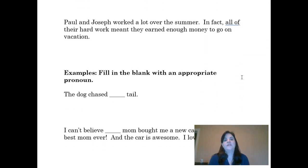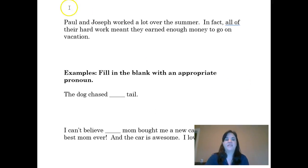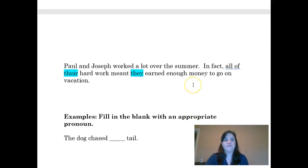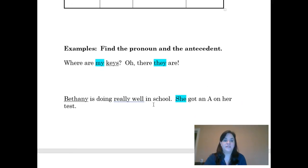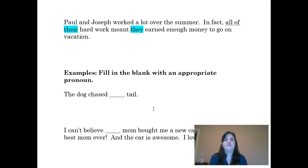Let's do one more example: 'Paul and Joseph worked a lot over the summer. In fact, all of their hard work meant they earned enough money to go on vacation.' I have two pronouns in this sentence — 'their' and 'they.' Looking at the chart, 'they' is a plural third-person subject pronoun, and 'their' is a plural third-person possessive pronoun. These are both speaking about more than one other person. Both pronouns have the same antecedent — they're both referring to Paul and Joseph.